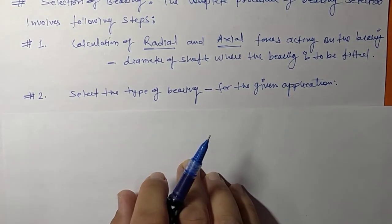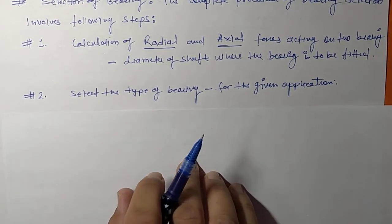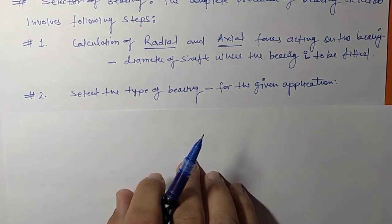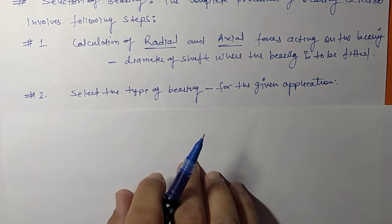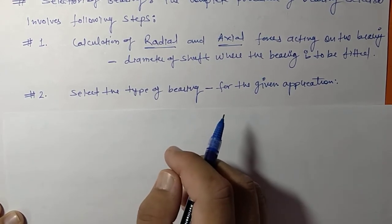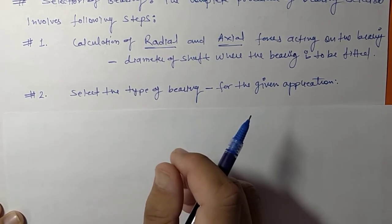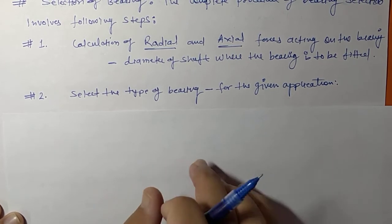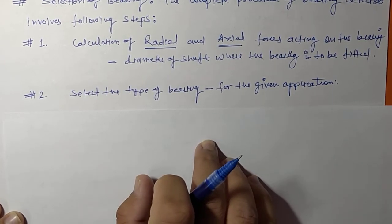The second step is to select the type of bearing for the given application. Selection depends on the requirements and characteristics of different bearing types. For example, for low and medium radial loads, ball bearings are used, whereas for heavy loads and large shaft diameters, roller bearings are selected.